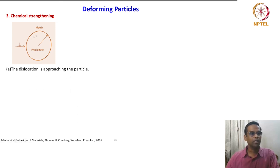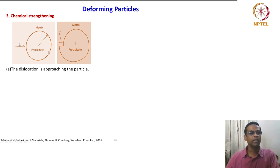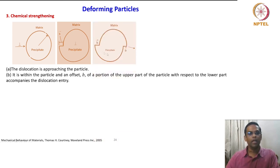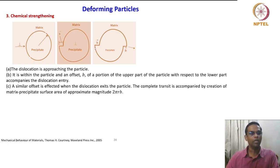The next mechanism is chemical strengthening. The dislocation is approaching a particle, it enters and creates a new surface. For this spherical particle, the dislocation with Burgers vector b creates a step — a new surface is created. There is an offset b of a portion of the upper part of the particle with respect to the lower part as the dislocation enters. A similar offset is effected when the dislocation exits the particle.